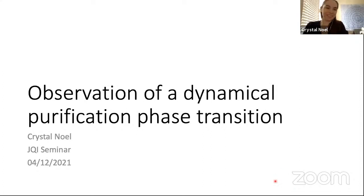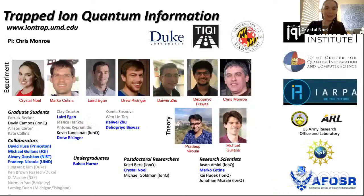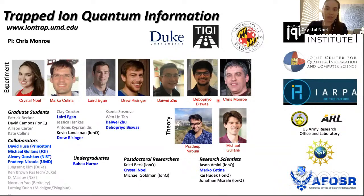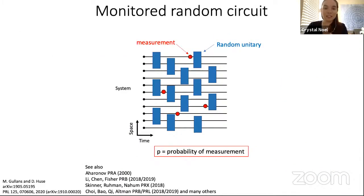Thanks, Chris. Today I'll be talking about what we call a dynamical purification phase transition — a kind of measurement-induced transition. I'll break that down through my talk. First, I want to thank the team I work with. We have a big experimental team here at the University of Maryland, led by our research scientist Marcos Tina, our PI Chris Monroe, and several graduate students. I also collaborate closely with two theory collaborators, Pradeep and Michael, at the University of Maryland. The idea I'll be talking about today is what we call a monitored random circuit — essentially an open quantum system where measurement serves as the interaction with the environment.